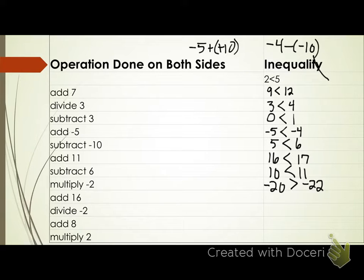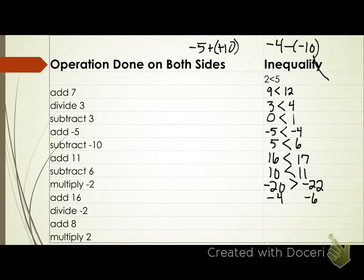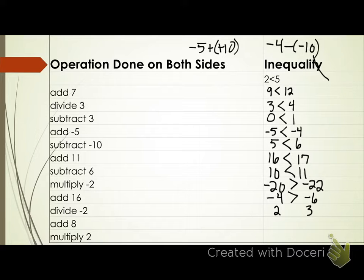Let's continue on. Add sixteen to both sides. Negative twenty plus sixteen is negative four. Negative twenty-two plus sixteen is negative six. Inequality symbol? Greater than — it stayed the same again. Now divide by negative two. Negative four divided by negative two is two. Negative six divided by negative two is three. Inequality symbol? Less than. Two is less than three. It flipped again.